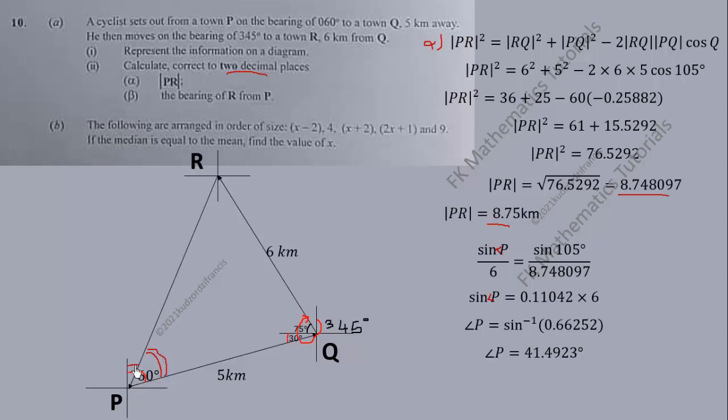But we are looking for this, so we subtract it from 60. So the bearing of R from P is this. The angle is 18.5077.